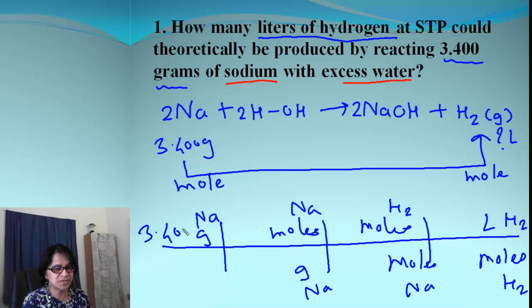This is 3.400. When it's moles to grams, it's always 1 mole. And this will be the molar mass for sodium, which is 23.00. This is the mole ratio. And we look for the coefficients for hydrogen. This is 1, and coefficient for sodium is 2. So we are going to plug in those coefficients for mole ratio.